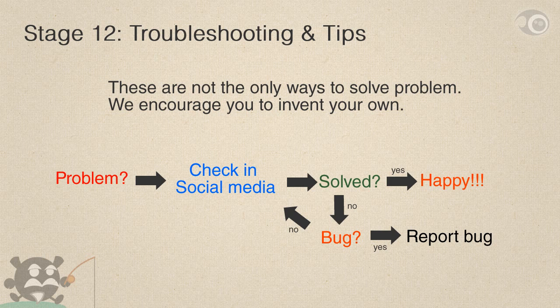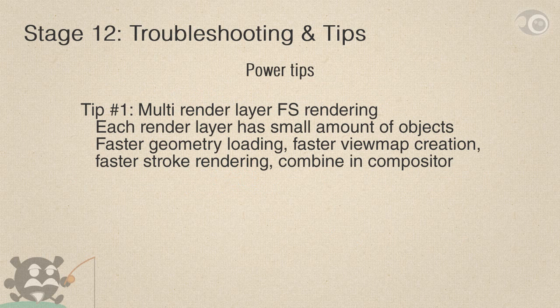If you found a problem that can't be fixed, it might just be a bug. No rush to report it — ask the community first. When confirmed a bug, go to the bug tracker and hit it. Tip number one: performance enhancement with multi-rendered layer Freestyle rendering. Each layer has a small amount of objects to edge, so Freestyle will load less geometry, giving faster view map creation and stroke rendering for each layer.